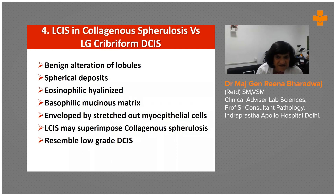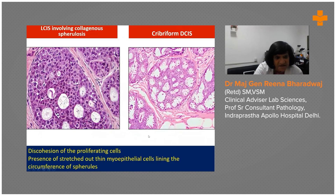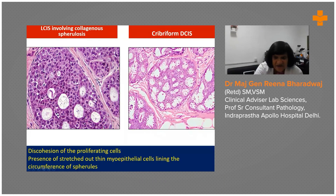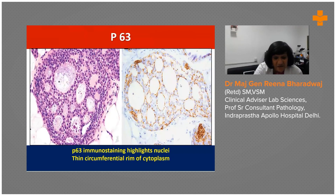When LCIS is associated with collagenous spherulosis, you will see spherical deposits of eosinophilic hyaline material and basophilic mucinous matrix enveloped by stretched-out myoepithelial cells. Here you have collagenous spherulosis with discohesion of proliferating cells and stretched-out myoepithelial cells around the circumference of the spherules, while on the other side there is a cribriform DCIS — very punched out, though the cells are quite monomorphic. If still in doubt, use P63, which will highlight the nuclei circumferentially in a rim around myoepithelial cells in case of LCIS.